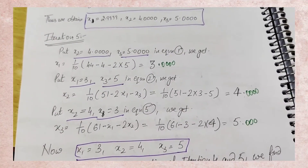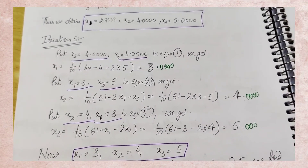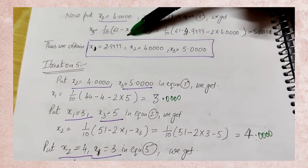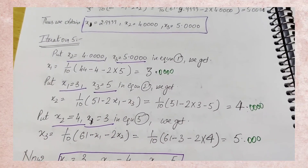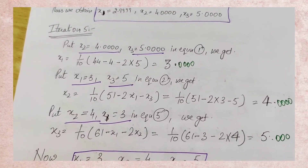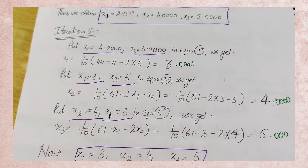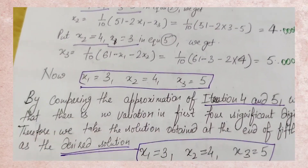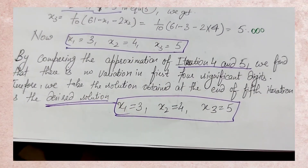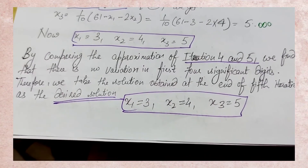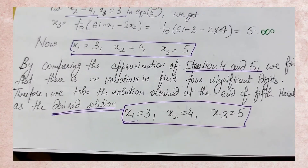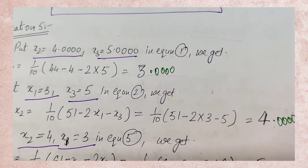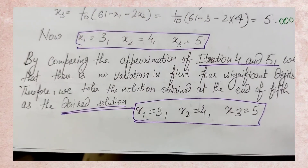In a future video on bisection, another trick will be shown: if iterations keep going and convergence isn't reached, there's a way to stop early. Here, since we carried 4 significant digits, our iterations ended at 5. A normal student might continue until iteration 8 or 9 because they don't know this rule. Taking 4 significant digits helps you reach the resultant value faster — that's the perfection of this method. By comparing approximations of iterations 4 and 5, we find no variation in the first four significant digits, so we take the solution at the end of iteration 5: x1 = 3, x2 = 4, x3 = 5.